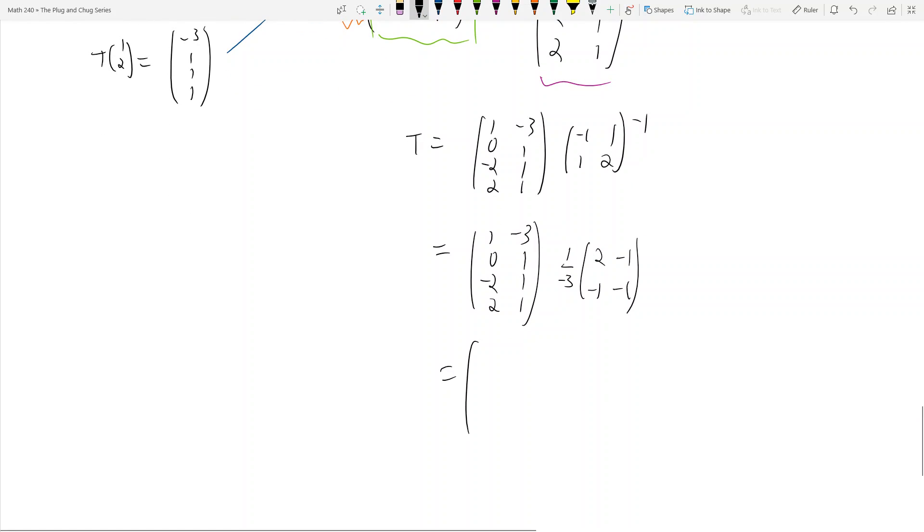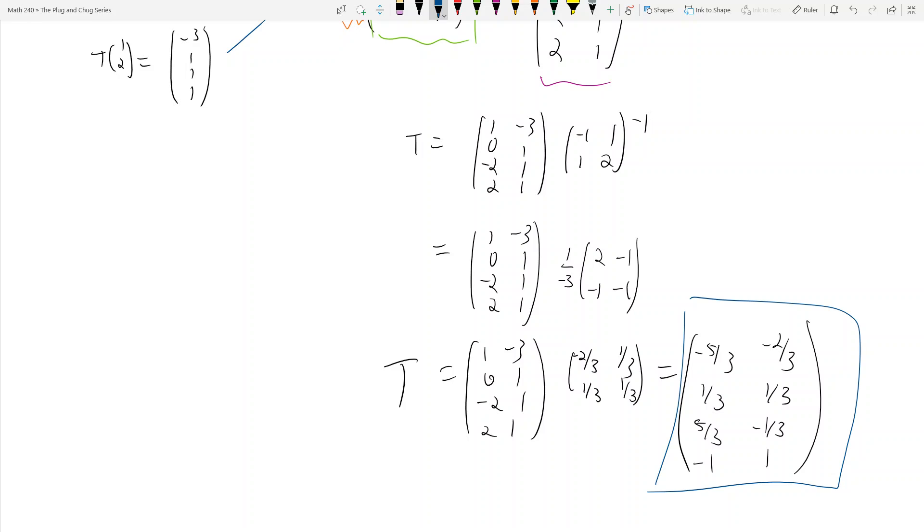And so this is actually then (1, 0, −2, 2; −3, 1, 1, 1) times (−2/3, 1/3; 1/3, 1/3). And you should get then (−5/3, something; something, something) and negative 1, negative 1, and positive 1. And so now you see that T is equal to this guy, and you're done.